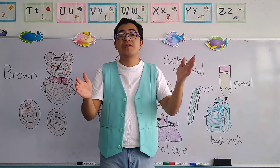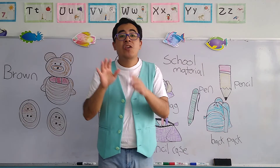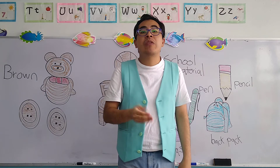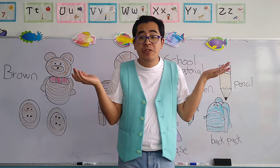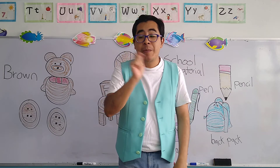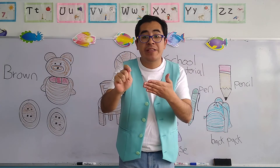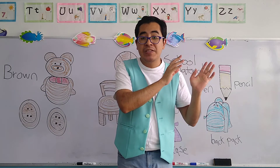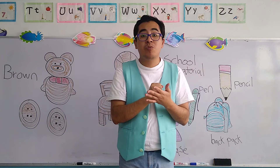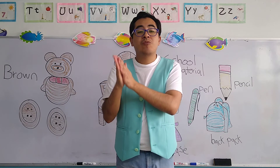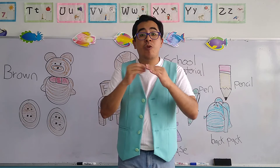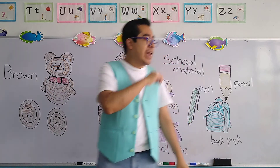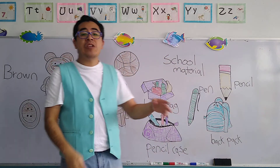Next to the pencil we have the pen. Now there is a big difference between pencil and pen. The pen you use when you are older — la pluma la utilizarán cuando ustedes sean un poco más grandes. Why? Because with the pen you can't erase what you write — no pueden borrar lo que se escribe cuando utilizan una pluma. With the pencil you can — con el lápiz sí podemos borrar. Por eso, when you are older you are going to be able to use the pen — van a poder utilizar una pluma. Now let's continue with the school objects.